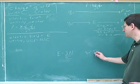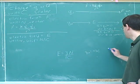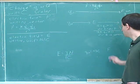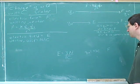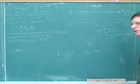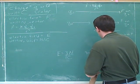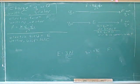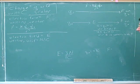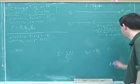Let's say we have a positive one-Coulomb test charge in an electric field of three newtons per Coulomb. What would be the magnitude of the force? Three newtons — we already saw that's how to interpret this. A one-Coulomb charge would feel three newtons of force.